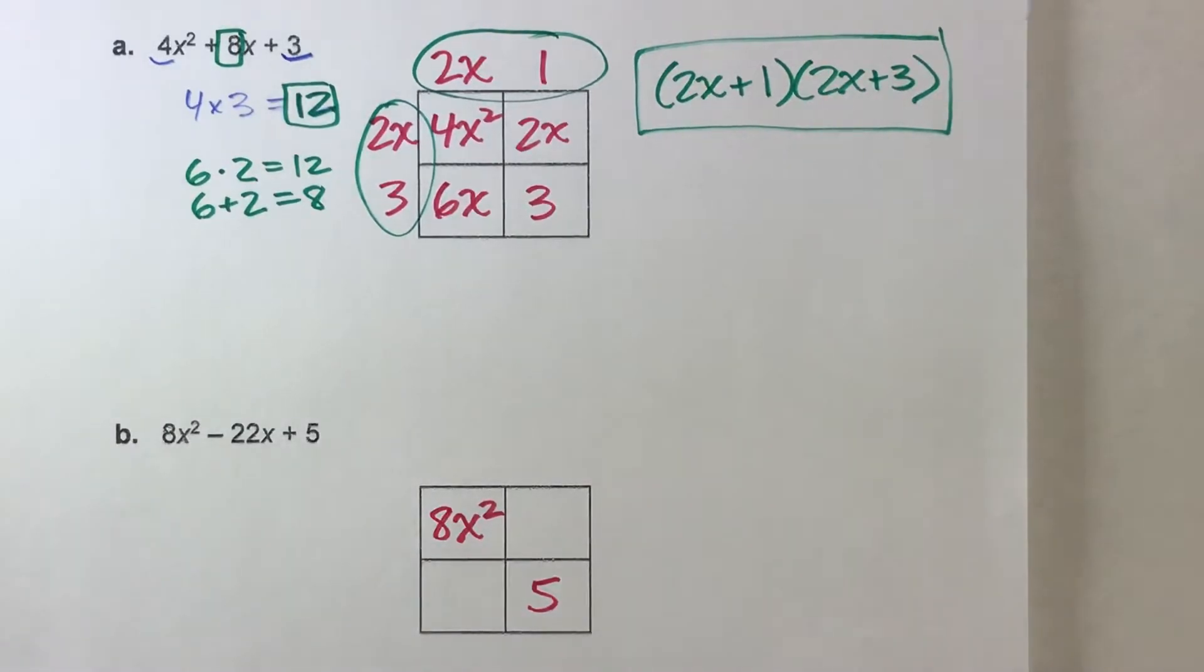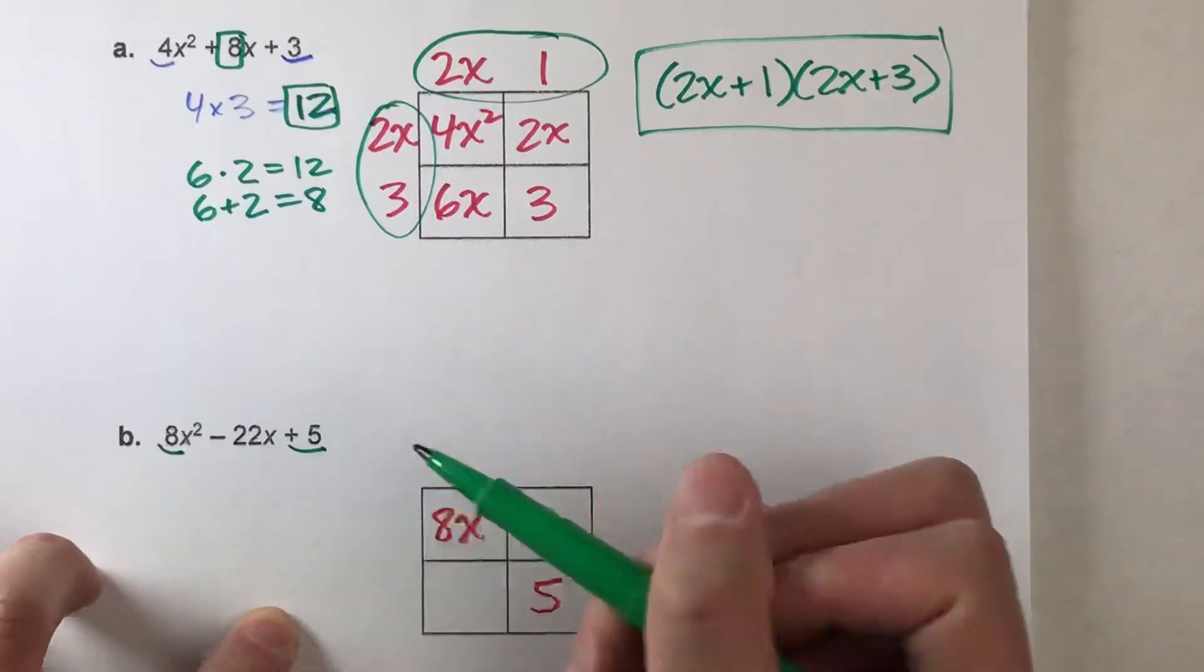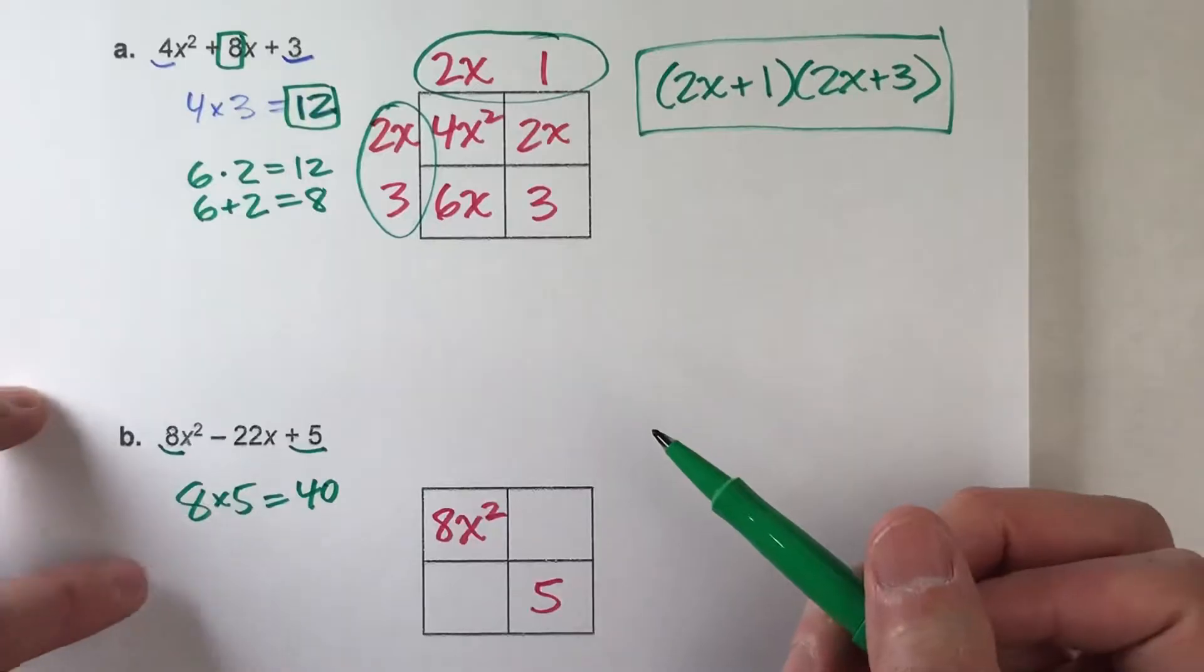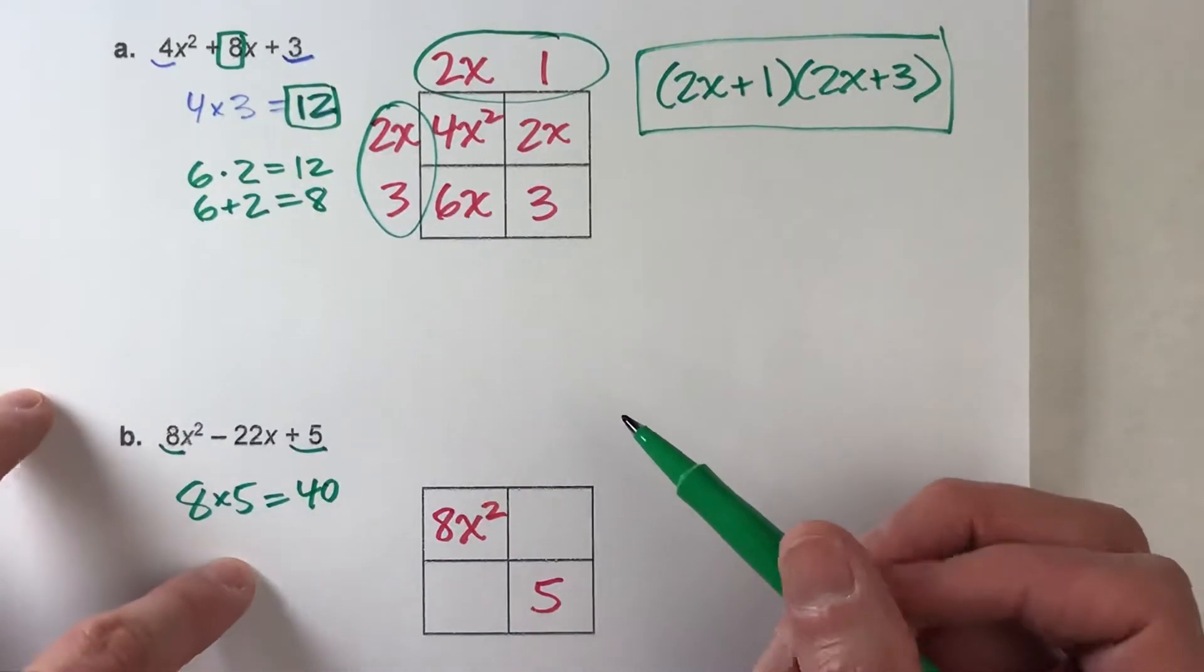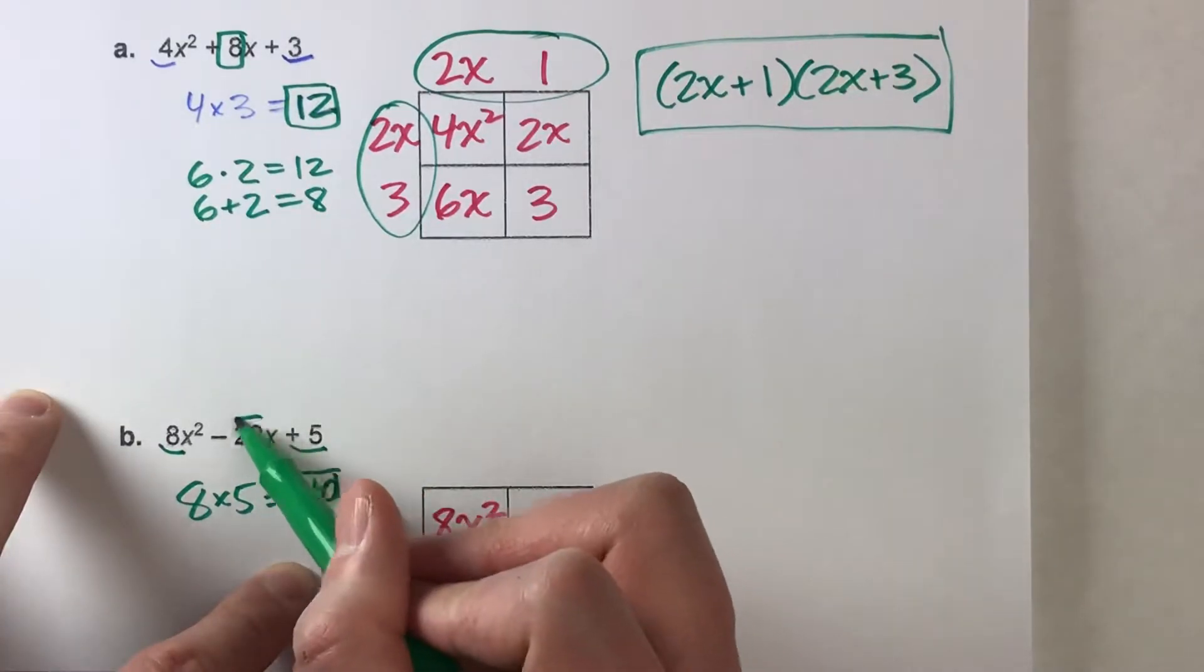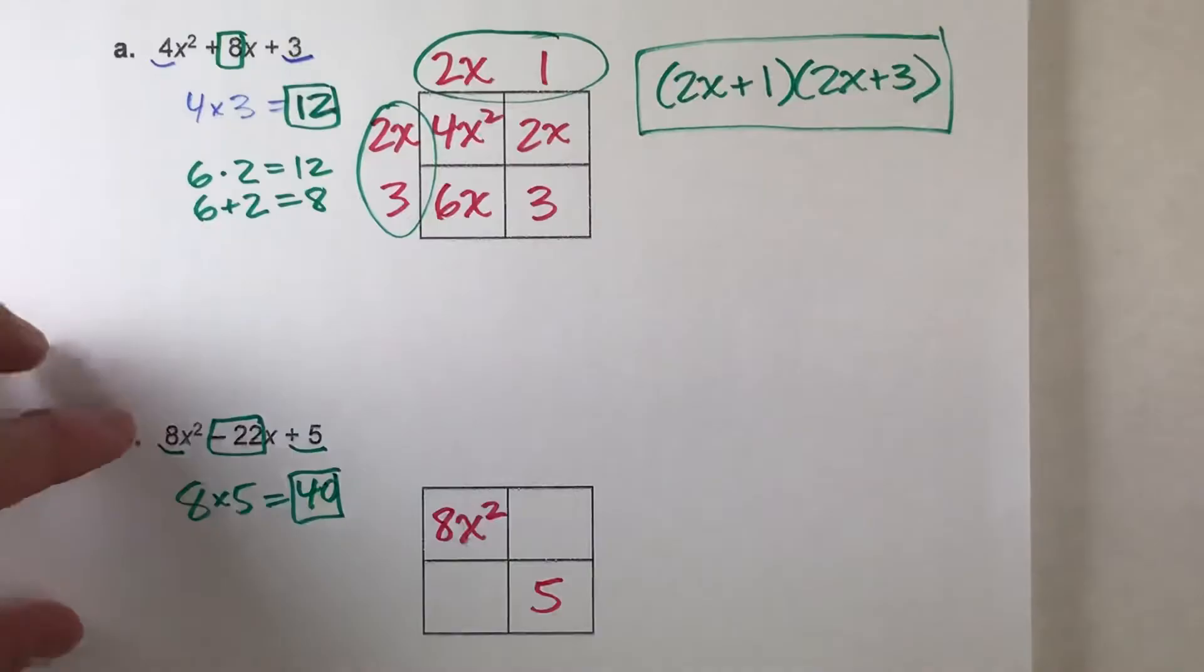Well, we're going to do a little bit of work. So remember, we're going to take this number next to x squared and the constant term, multiply them together. I get 40. So what I want are two numbers that multiply to get 40, but add to get negative 22. This one's a little bit trickier.